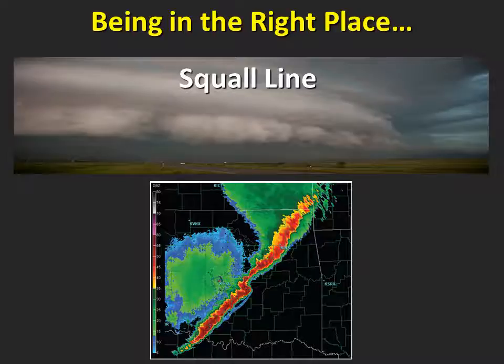In many cases, a supercell has a well-defined area that the spotter can focus on to watch for dangerous cloud features. But when a spotter is dealing with lines or clusters of storms, there are not many visual clues that can make for useful spotter reports, so positioning yourself to view the storm can be very difficult. In these situations, the best reports may be of measured or estimated wind gusts as the leading edge of the storm moves through, or hail or wind damage after the storms have passed.